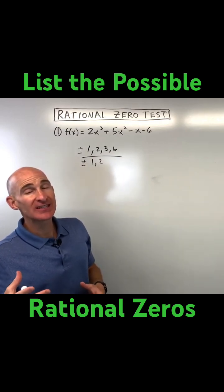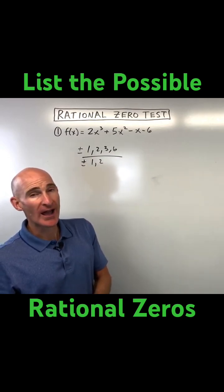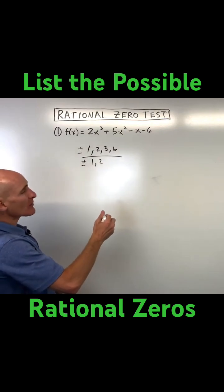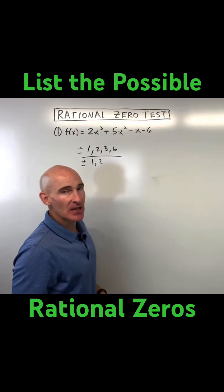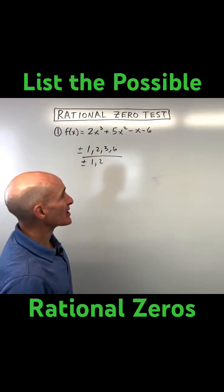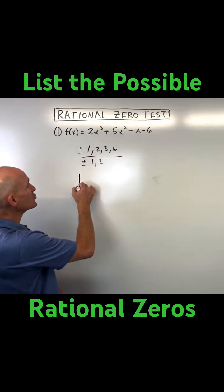And these just give us a list of the possible rational zeros. So when we talk about the zeros, these are the x-intercepts. It's where it crosses the x-axis. And the way we check to see if they're actually zeros or not is we do synthetic division.